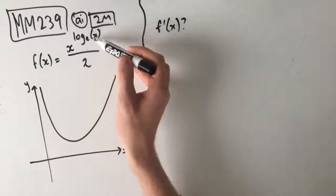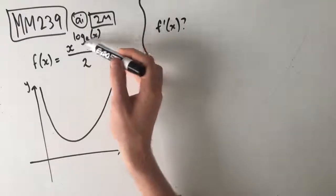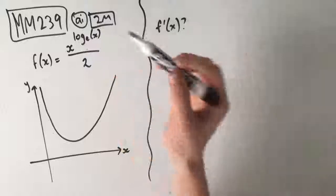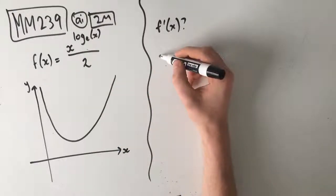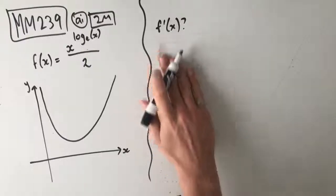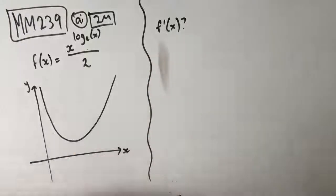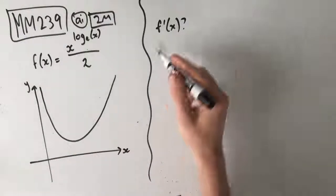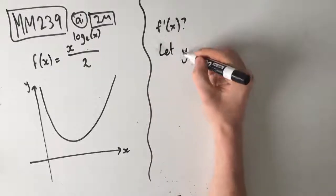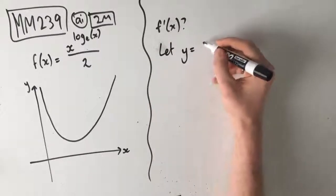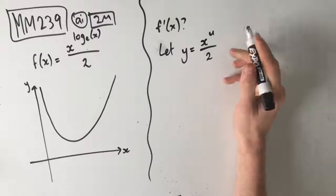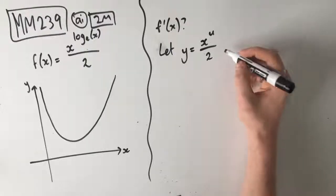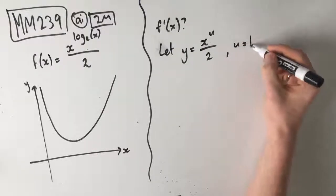First things first is to recognize what kind of rule we're going to have to use to differentiate this. We've got x to the power of something, and that something is a function. So what we're going to do is say let y equal x to the power of u over 2, where u is equal to log e of x.